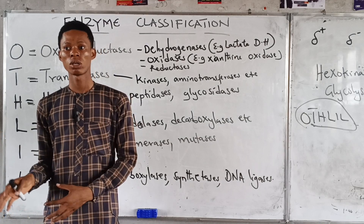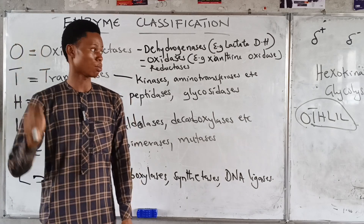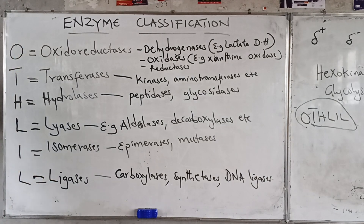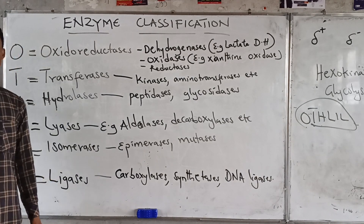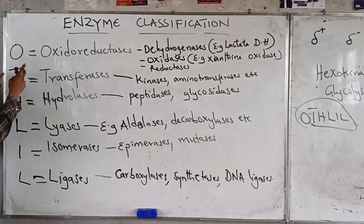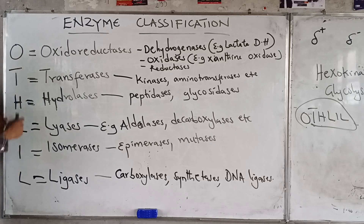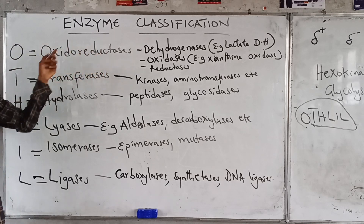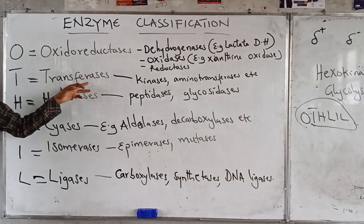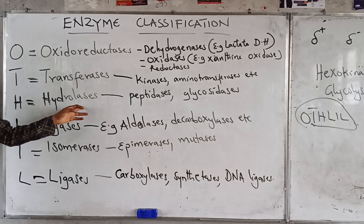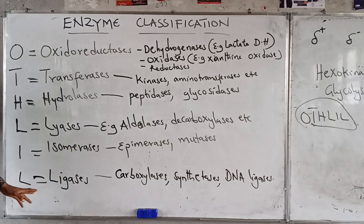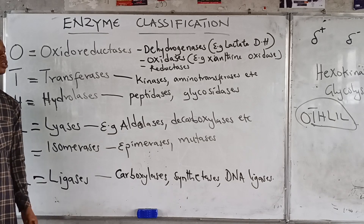There are 7 now, but I'll talk about the six main types. The six main classifications of enzymes based on the reaction they catalyze is summarized as OTHLIL, where O is oxidoreductases, T is transferases, H is hydrolases, L is lyases, I is isomerases, and L is ligases.